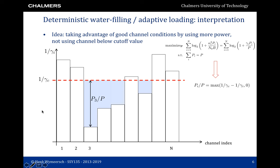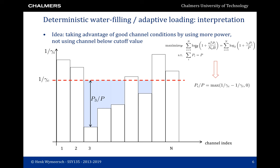The second instance of water filling is deterministic water filling, also known as adaptive loading. In this case we have N parallel channels that are not random — in fact the channels are known and deterministic. We solve again a convex optimization problem, which leads to a water filling kind of solution, where the power p_i allocated to channel i depends on the SNR on that channel. If that SNR is low, we don't allocate any power.